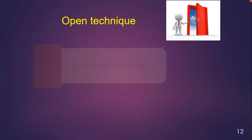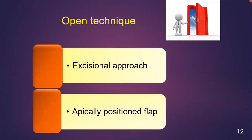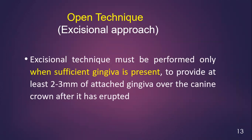The open technique includes the excisional approach and the apically positioned flap. The excisional approach means you remove a portion of the soft tissue. Keep in mind that a sufficient amount of attached gingiva must be present around the crown of the impacted canine — at least two to three millimeters of attached gingiva must cover the crown.